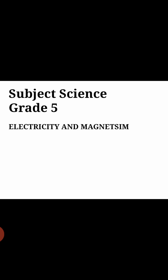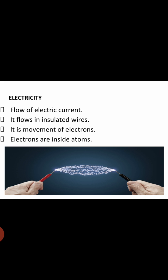Electricity is a flow of current. It flows in insulated wires — insulated wires are those through which electric current cannot pass. It is a movement of electrons. Electrons are inside atoms. A question will come into your mind: what type of movement? The movement would be in the same direction.